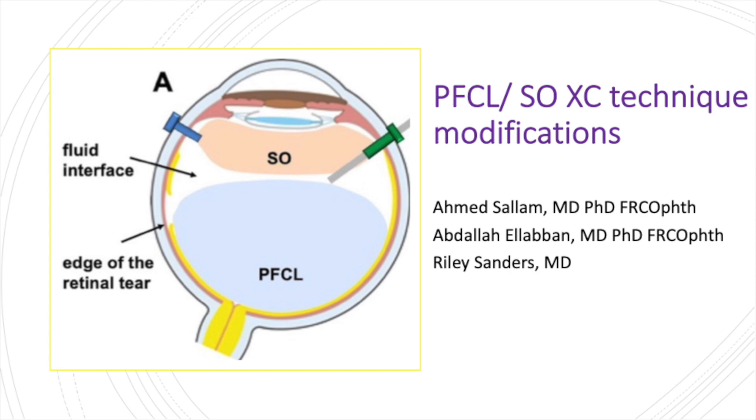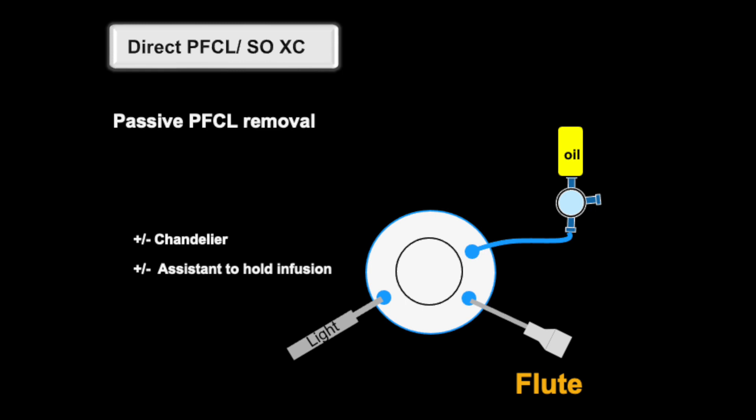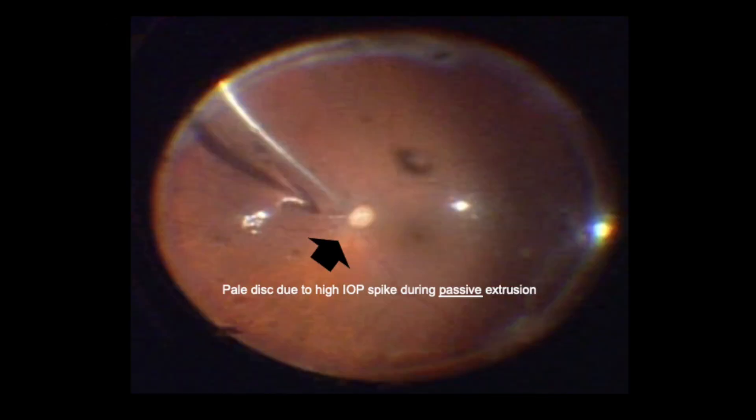That's important when you're dealing with giant retinal tears or a retinectomy. The problem is the active injection of silicon oil is more efficient than the passive aspiration of PFCL, therefore pressure rises inside the eye and that can cause problems up to even rupture globe if the surgeon is not wary enough.